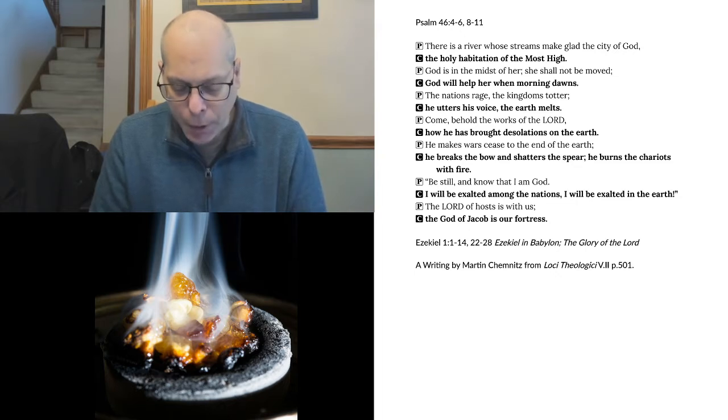As I looked, behold, a stormy wind came out of the north, and a great cloud, with brightness around it, and a fire flashing forth continually, and in the midst of the fire, as if it were gleaming metal. And from the midst of it came the likenesses of four living creatures, and this was their appearance. They had a human likeness, but each had four faces, and each of them had four wings. Their legs were straight, and the soles of their feet were like the sole of a calf's foot. And they sparkled like burnished bronze.